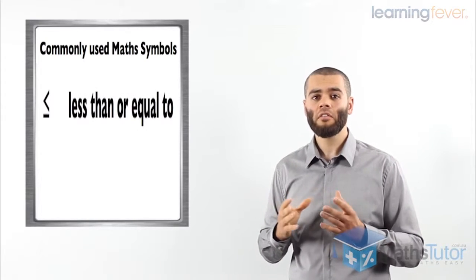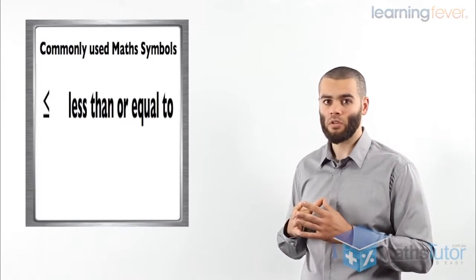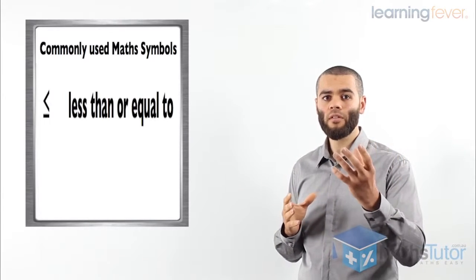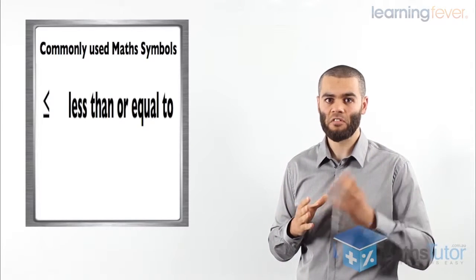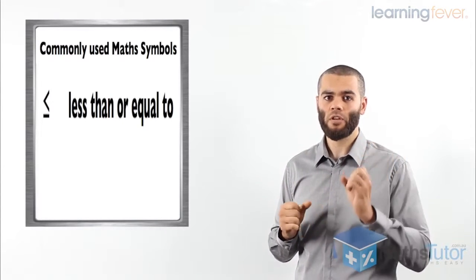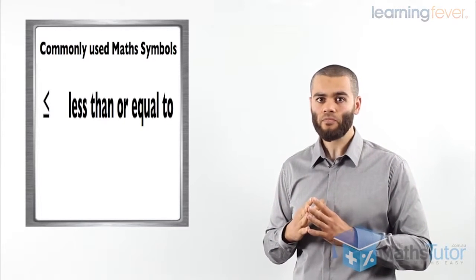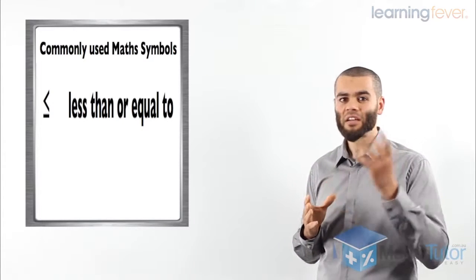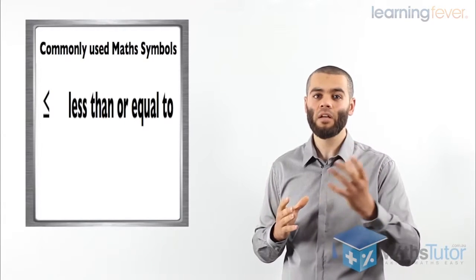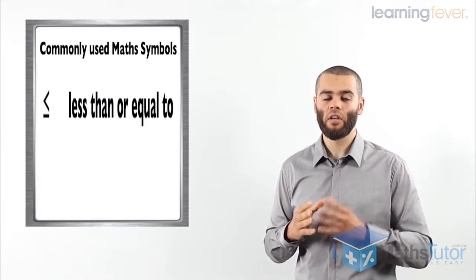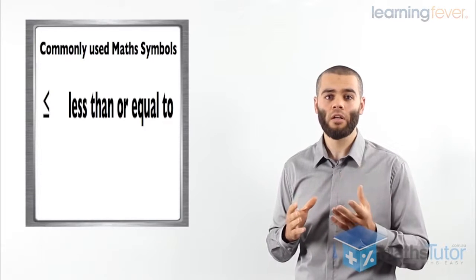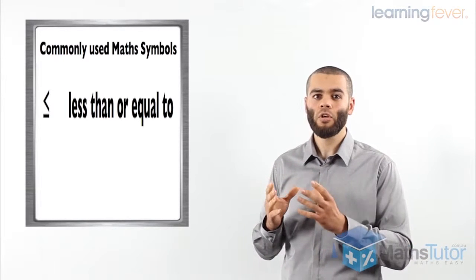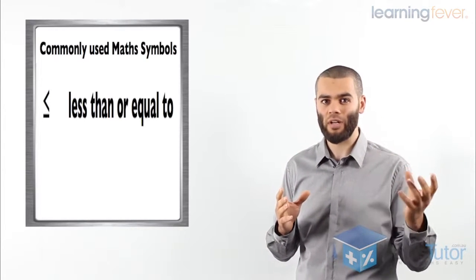The next symbol is the less than or equal to symbol, which states that a number can be equal to another number but also can be less than it. For example, x is less than or equal to 5. That means x can be 5, but also any number below 5 — it can be 4, 3, 2.5, 1, 0, or even negative. So less than or equal to means x can be 5 or less.